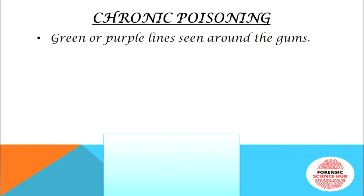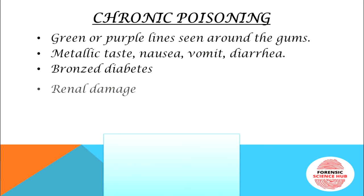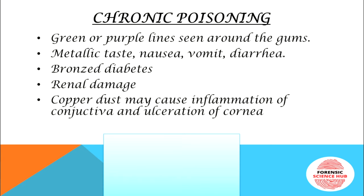In chronic poisoning, green or purple lines are seen around the gums — similar to the Burton's line seen in lead poisoning and the green line seen in mercury poisoning. Other features include metallic taste, nausea, vomiting, and diarrhea, which are common to all metallic poisonings. Bronze diabetes is seen in copper poisoning. Renal damage may occur. Copper dust may cause inflammation of the conjunctiva and ulceration of the cornea. Skin becomes jaundiced.